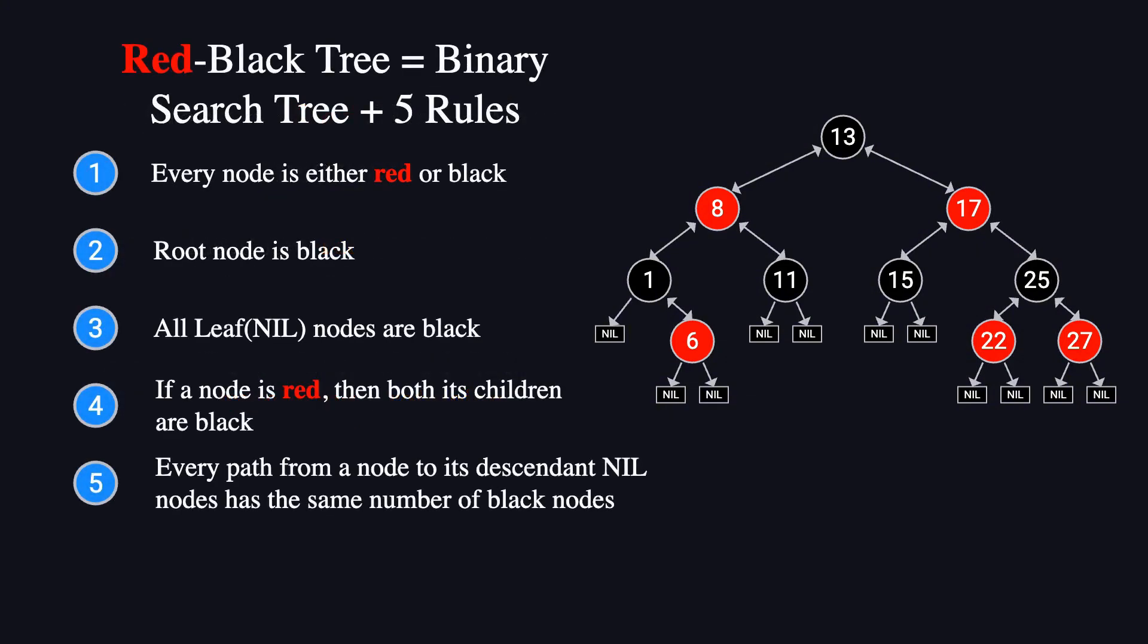So, what rules could be violated when inserting a red node? Let's go through them one by one. Rule one states that every node must be either red or black. This rule is never violated because the new node is always red.